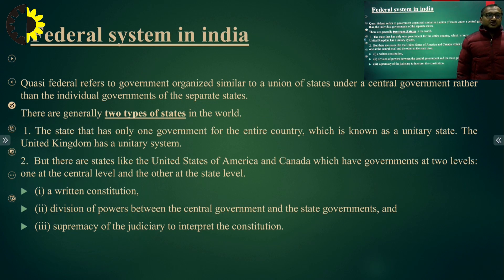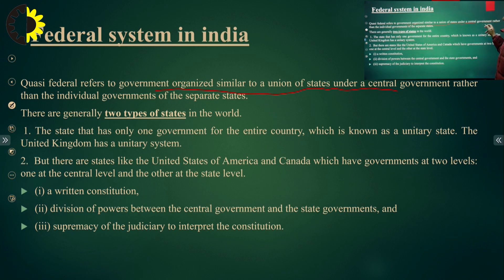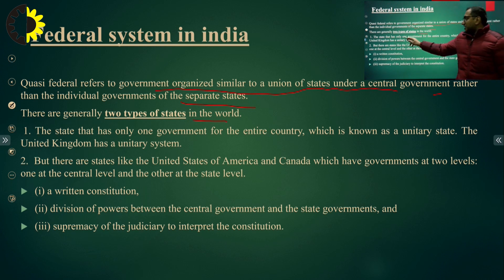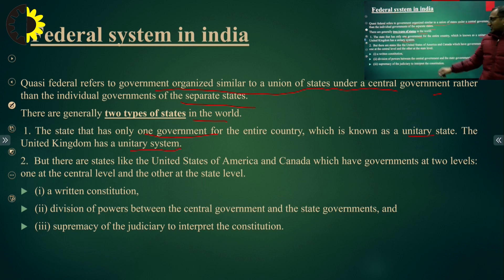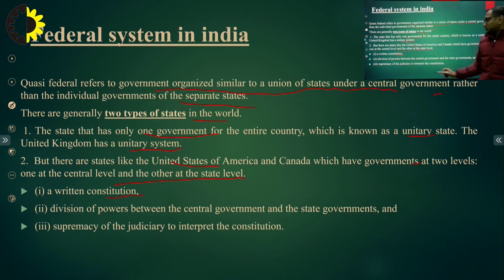The federal system means the government is organized with state governments under a central government. There are two types of states in the world: unitary states, which have only one government for the entire country — like the United Kingdom — and federal states, like the United States of America and Canada, which have governments at two levels: one at the central level and one at the state level. In a federal system, there must be a written constitution, division of power between central and state governments, and supremacy of the judiciary to interpret the constitution.